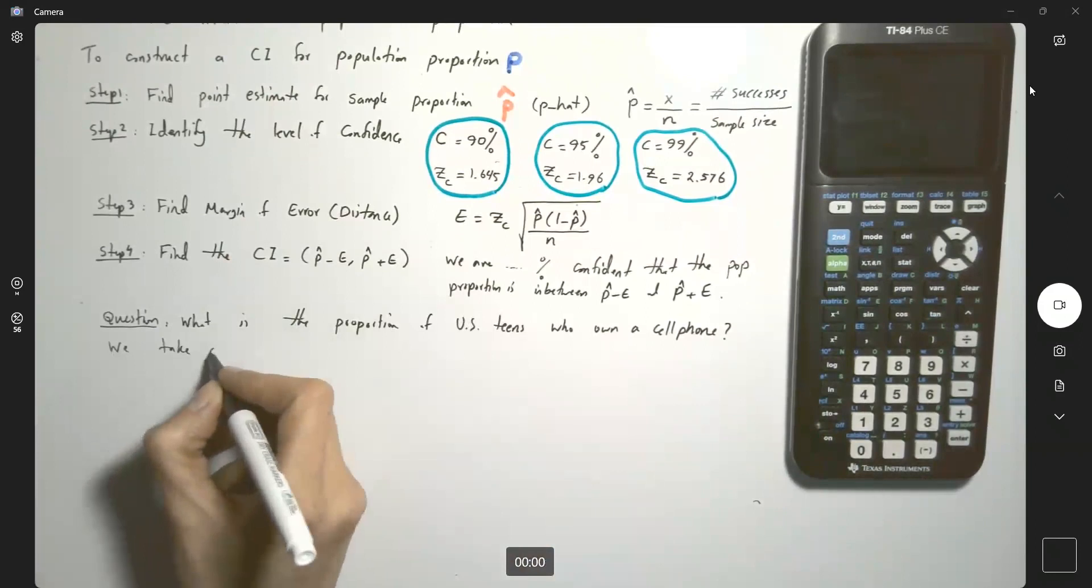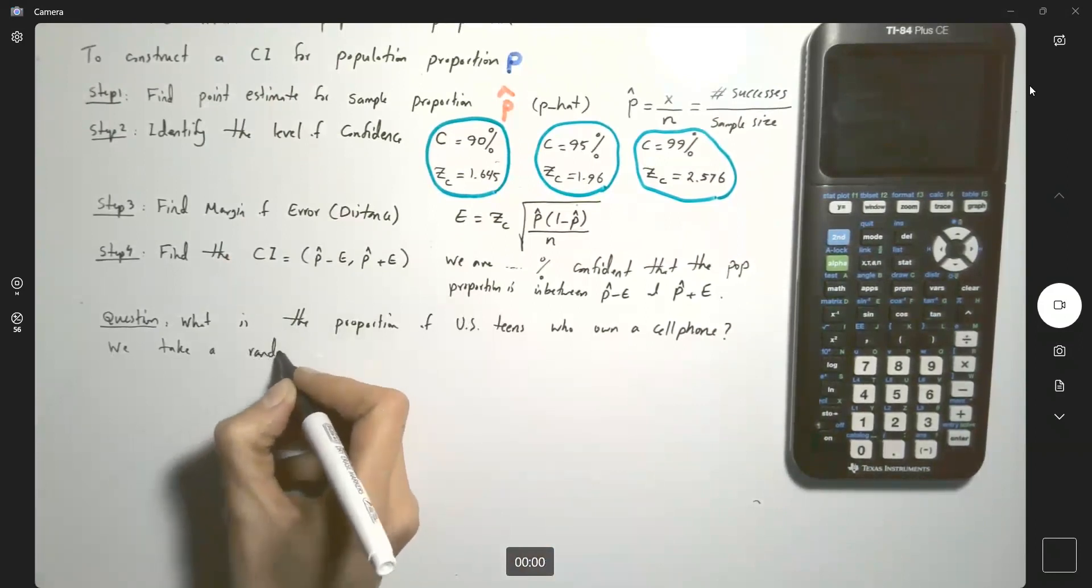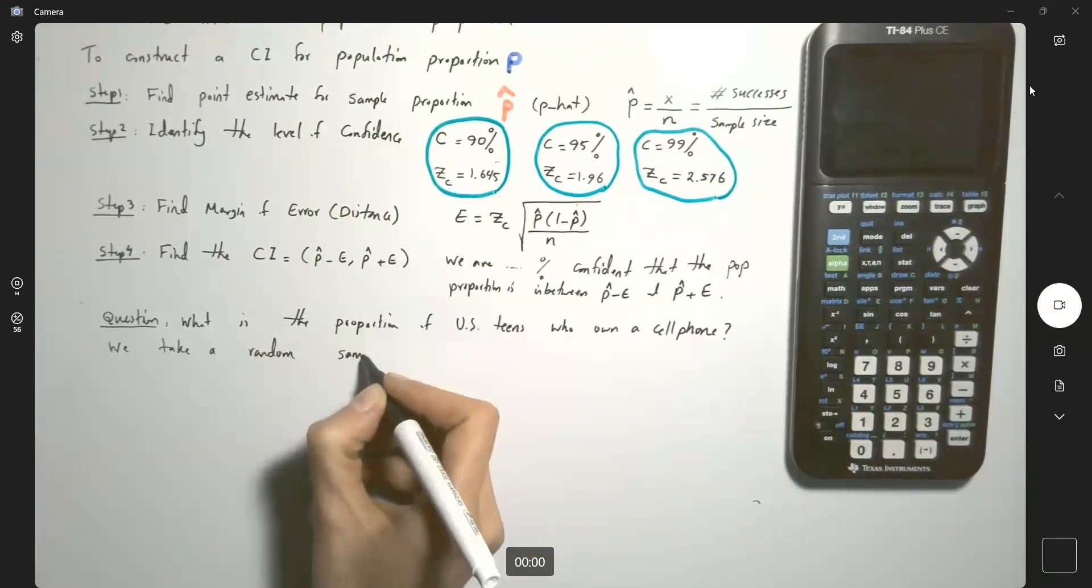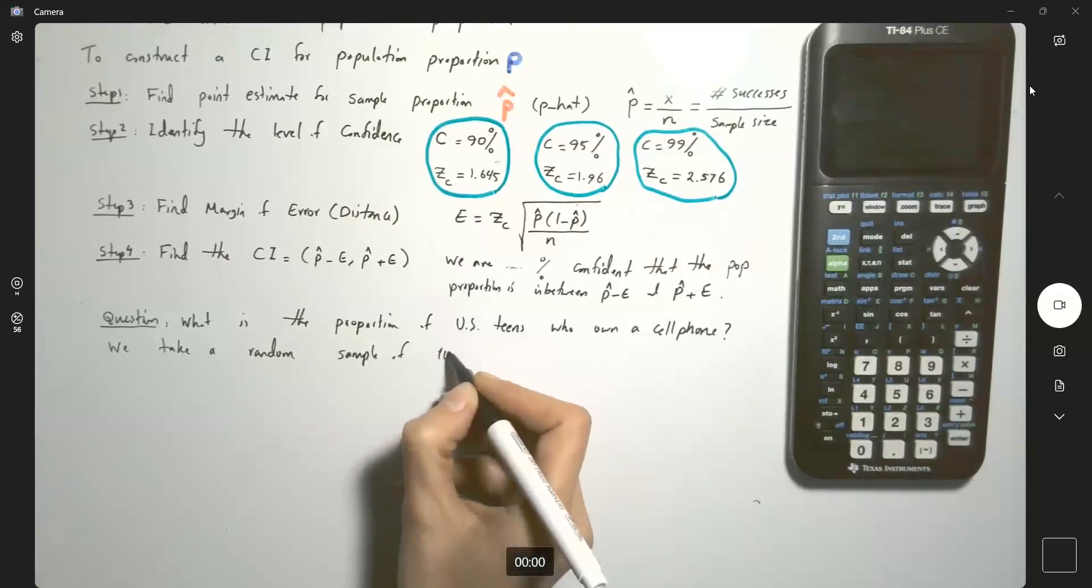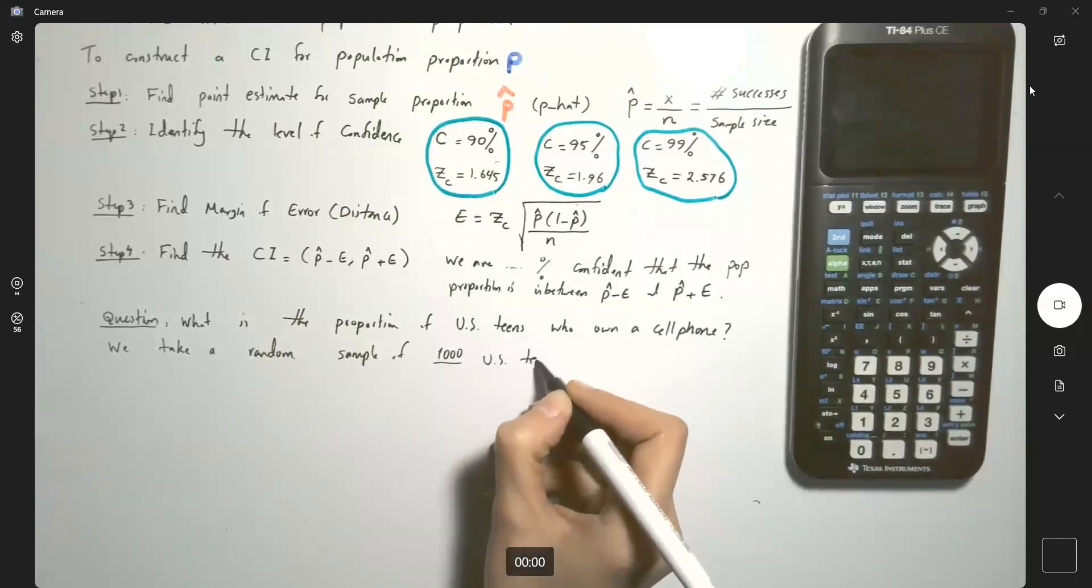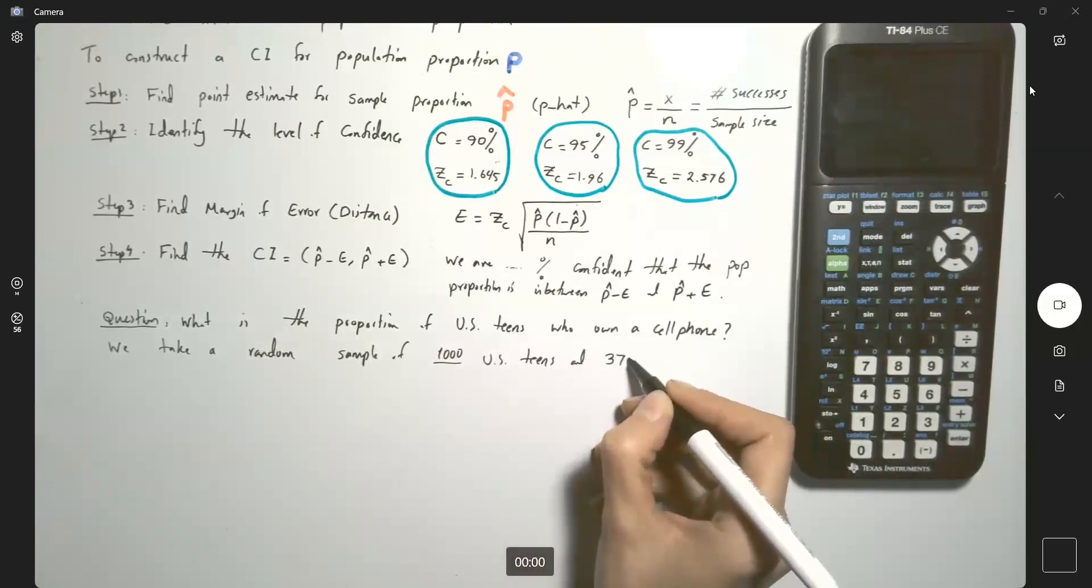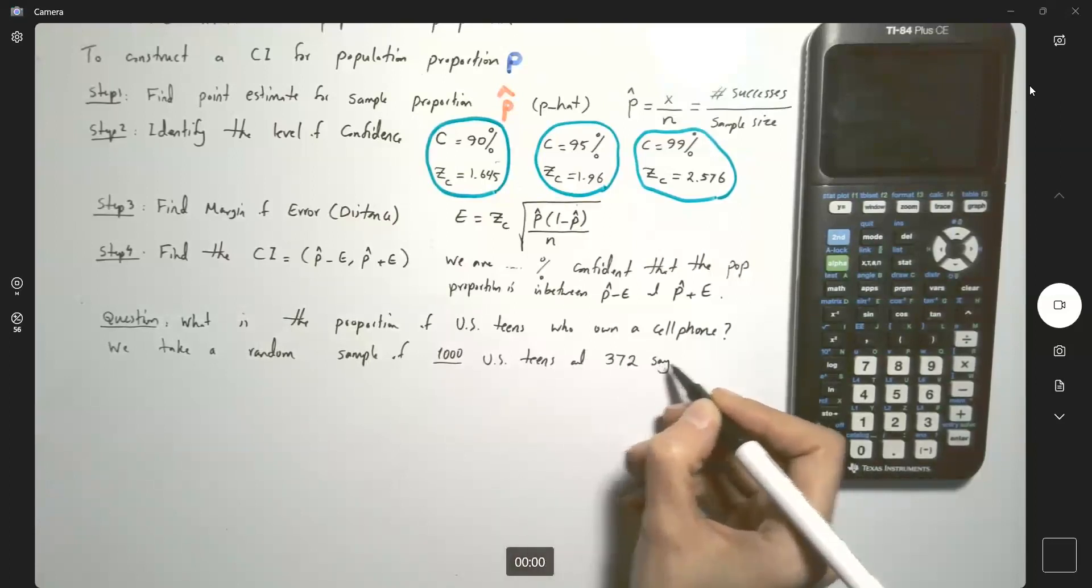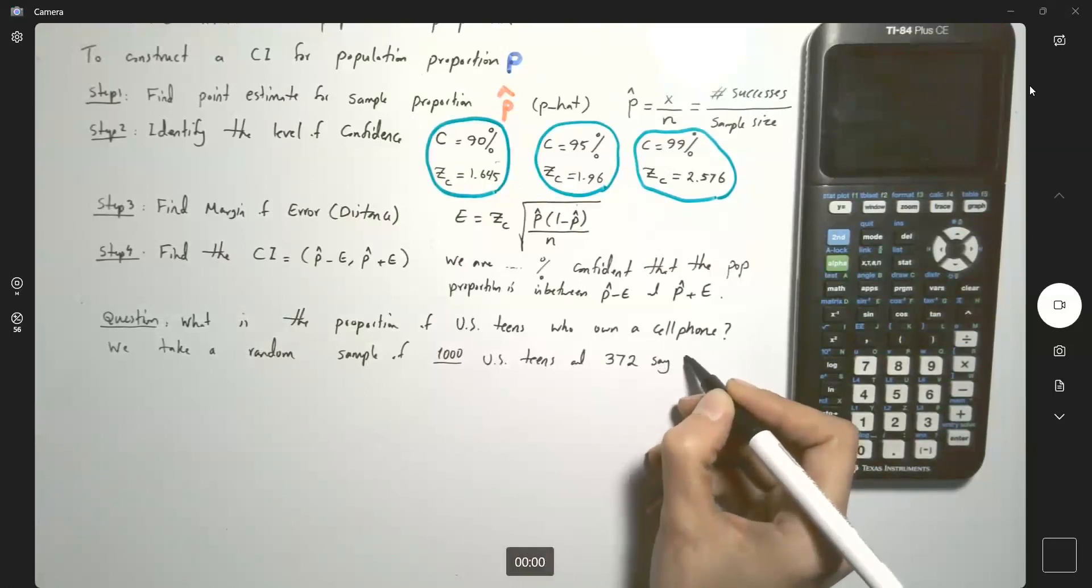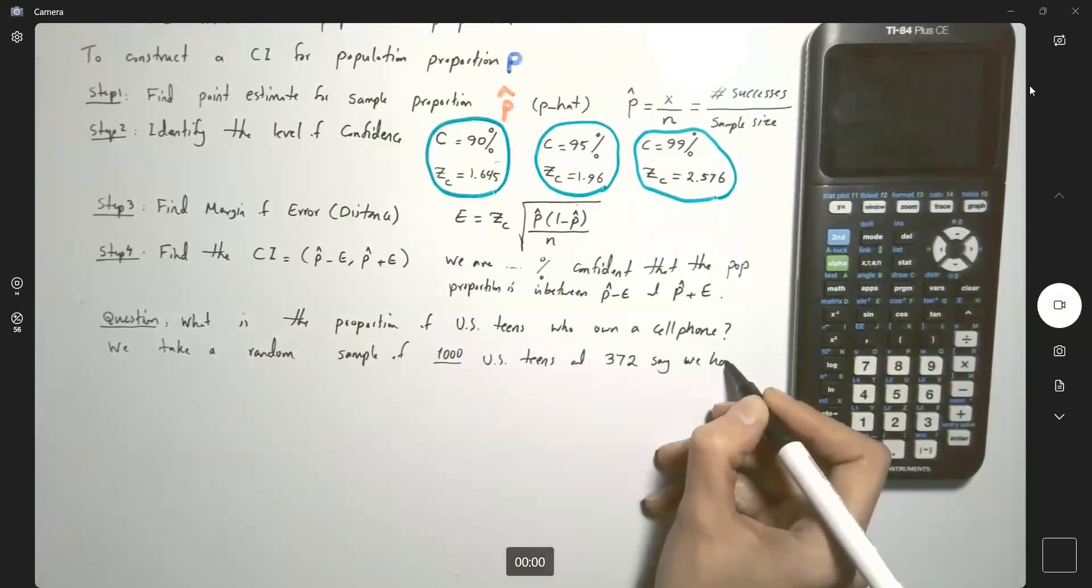We take a random sample of a thousand U.S. teens and 372 say we have a cell phone.